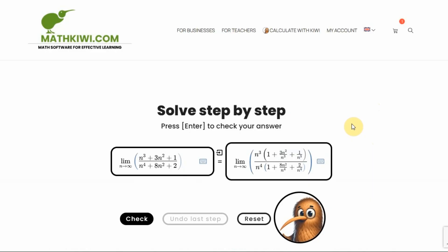Do you understand? I didn't do anything here. I just factored out n to the third from these three components at the top in the numerator, and at the bottom from these three components, I factored out n to the fourth, resulting in something like this.